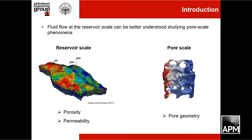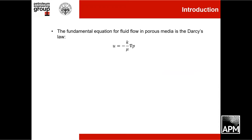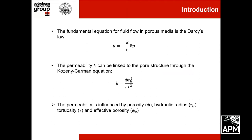Free flow at the reservoir scale can be better understood by studying pore-scale phenomena. Porosity and permeability are dependent on the pore geometry, and our goal is to use pore-scale and pore geometry information to estimate the permeability. The fundamental equation for free flow in porous media is Darcy's law, which relates filtration velocity to the pressure gradient through the permeability of the medium. The Kozeny-Carman equation expresses the permeability in relation to the pore structure.